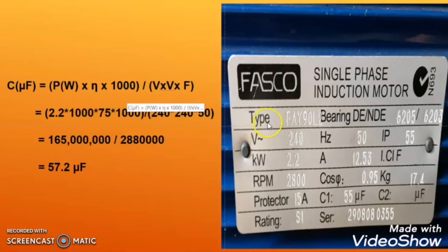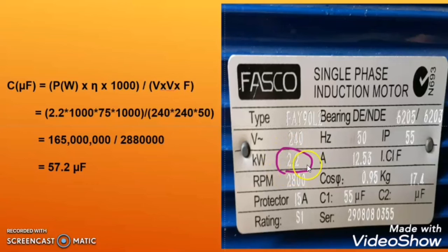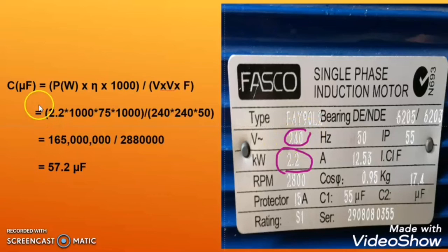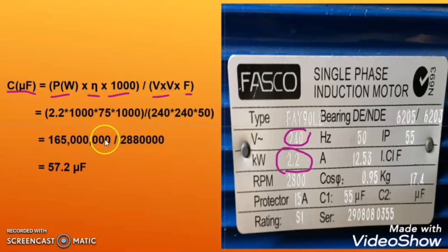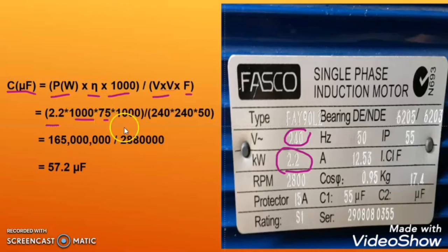Now let us calculate the capacitor rating for a bigger motor. Here the motor rating is given as 2.2 kilowatt and the voltage is mentioned as 240 volts. Using the same formula — C = P × efficiency × 1000 ÷ (V² × f) — the power is 2.2 kilowatt, which is 2200 watts.